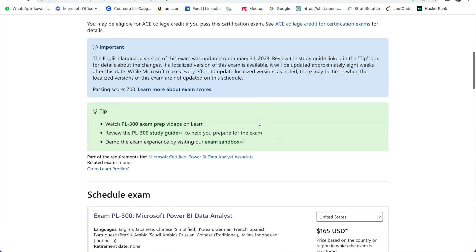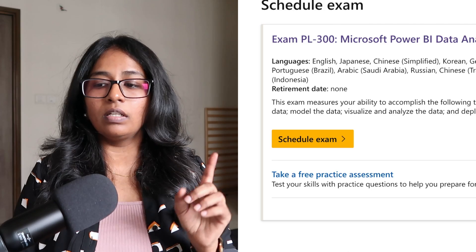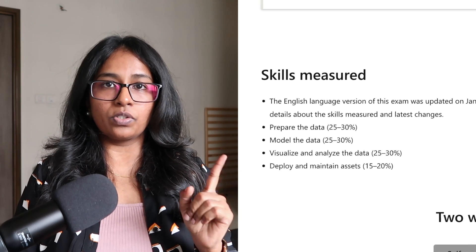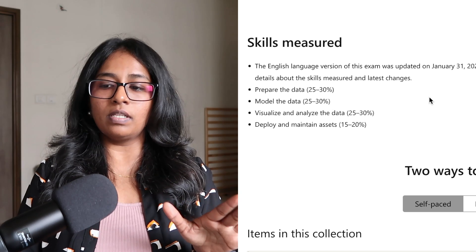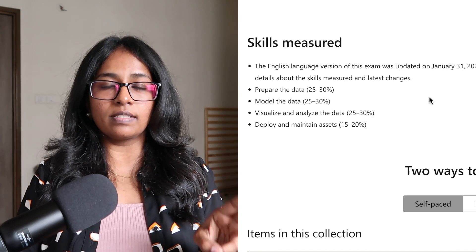Number two: skills measured. These are already mentioned on the PL-300 website, but I can reiterate them. Number one is 'Prepare the Data,' which occupies around 25–30%. Number two is 'Model the Data,' again 25–30%. Number three is 'Visualize and Analyze the Data,' again 25–30%. 'Deploy and Maintain Assets' will be 15–20%. The major focus is on Model the Data and Visualize Data, where the maximum questions will come from.